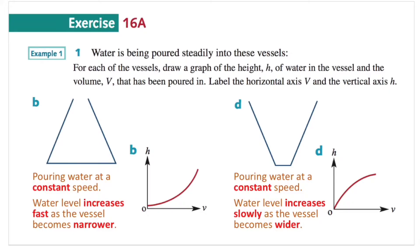This is exercise 16A question 1. The water is being poured steadily into these vessels. For each of the vessels, draw a graph of the height h of water in the vessel and the volume v that has been poured in. Label the horizontal axis v and the vertical axis h, representing the volume already in the vessel, and the vertical axis h representing the height of the water.